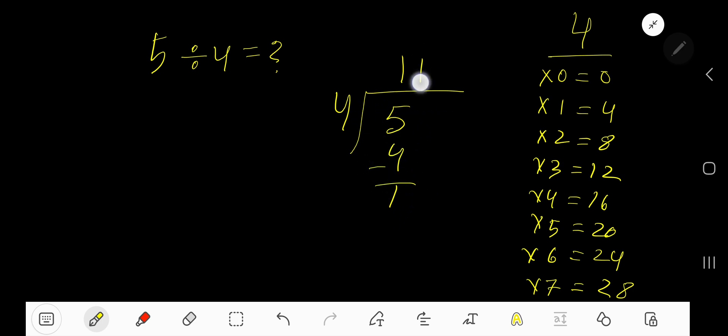So our answer is 1 remainder 1. But if you want to write your answer in decimal form, take your decimal, add number of zeros, bring down the first zero. But before the zero there is a decimal. The decimal must come to the quotient directly.